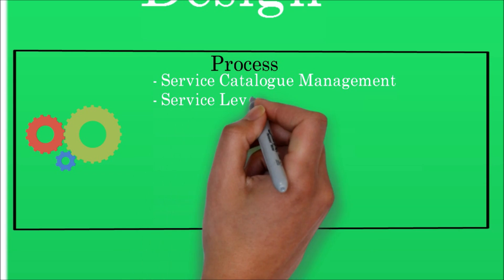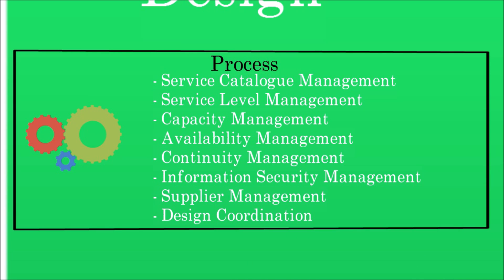Now we will see the eight processes in the Service Design phase. The first is Service Catalog Management, which ensures that a service catalog is produced and maintained containing accurate information on all operational services. The second is Service Level Management, which helps to negotiate service level agreements with customers and design services in accordance with agreed service level targets. It is also responsible for ensuring that all operational level agreements and underpinning contracts are appropriate and to monitor and report on service levels. Third is Capacity Management, which ensures that the capacity of IT services and the IT infrastructure is able to deliver the agreed service level targets in a cost-effective and timely manner.